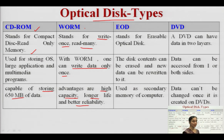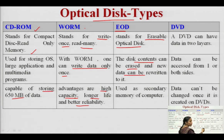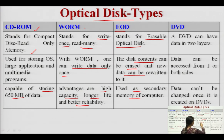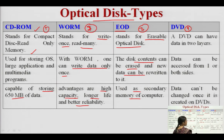The third kind is EOD (Erasable Optical Disc) — its contents can be erased and new data can be rewritten by erasing already existing contents. EOD is also used as secondary memory of a computer. The fourth kind is DVD — data is divided into two layers, and data can be accessed from one or both sides. The data cannot be changed once it is stored or created on DVDs.